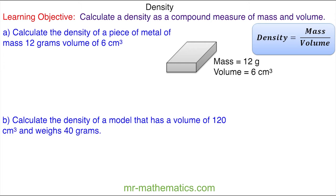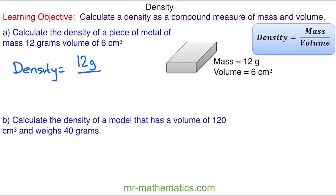In question one, we're asked to calculate the density of a piece of metal where the mass is 12 grams and the volume is 6 centimeters cubed. Using our formula, density equals 12 grams divided by 6 centimeters cubed, which is 2. So the density of the piece of metal is 2 grams per centimeter cubed.